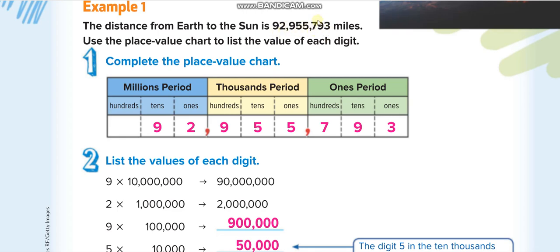The first three digits are the first period, the second three digits the second period, and the third three digits the third period, which is the millions period. So: 92 millions, 955 thousands, and 793. You use this same method when writing the word form of a number.